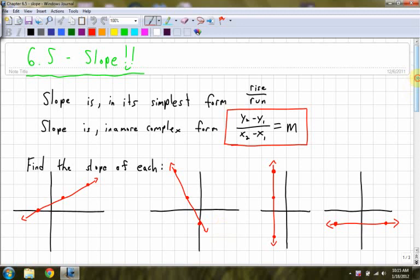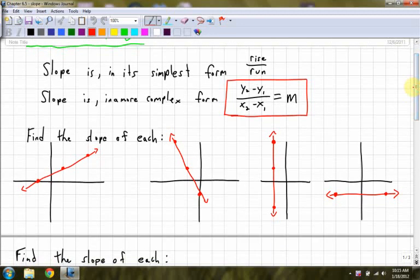Alright, so slope, section 6.5, in the simplest form it's basically just rise over run. In a more complex form, or what's called the slope formula, it's y2 minus y1 over x2 minus x1, which we'll see how to use a little bit later.